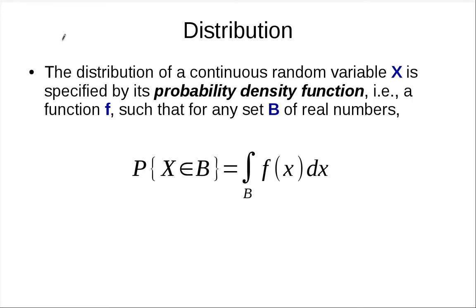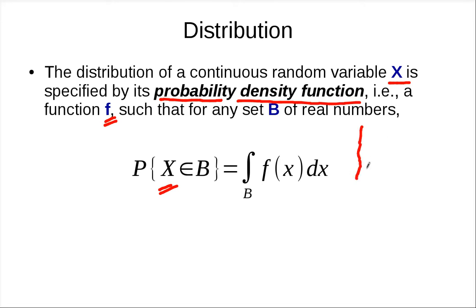Let's continue our discussion on continuous random variables. In the previous segment we said that the way we describe the distribution of a continuous random variable is to use the probability density function f. This function defines the density of probability that you're going to find the random variable X at some point. But this density is not the mass — it might get high at some point, low at some point, or extremely high at some point, but if the range is very small, the probability of finding something in that range is going to be small.